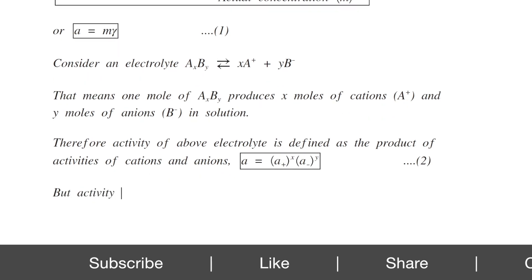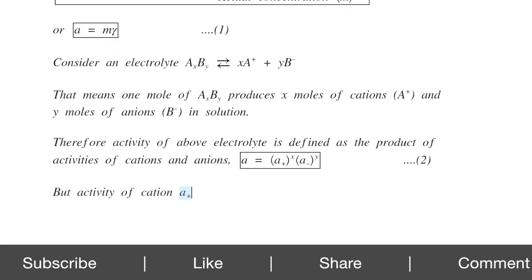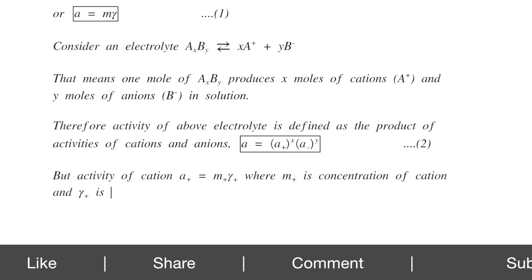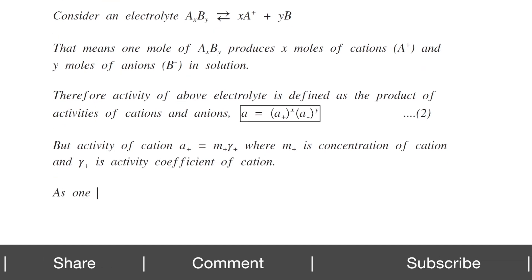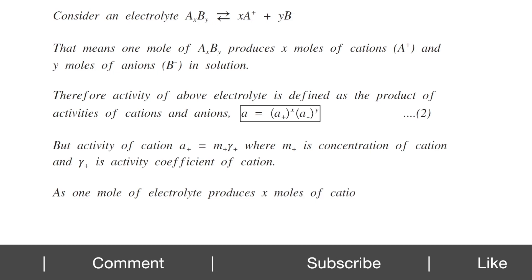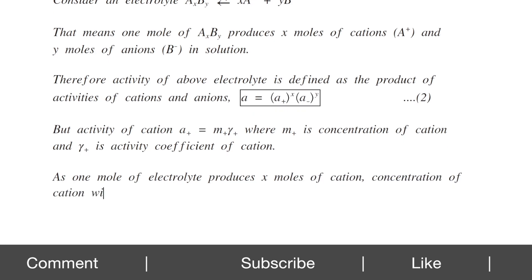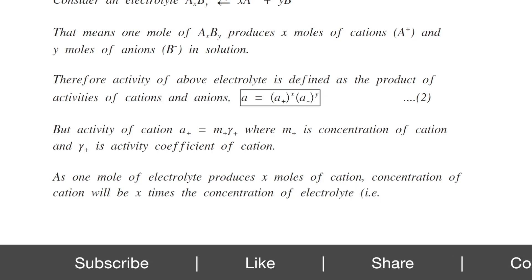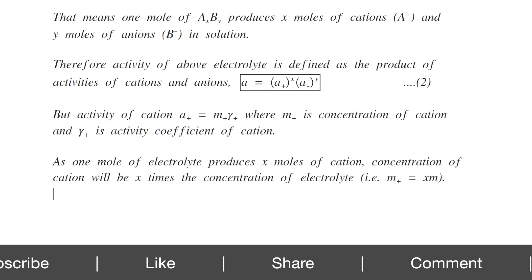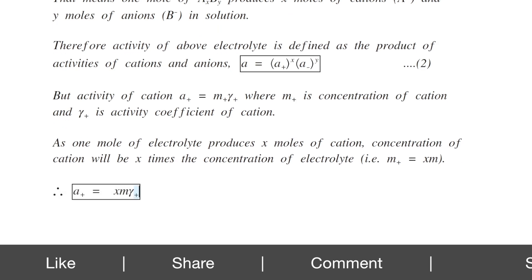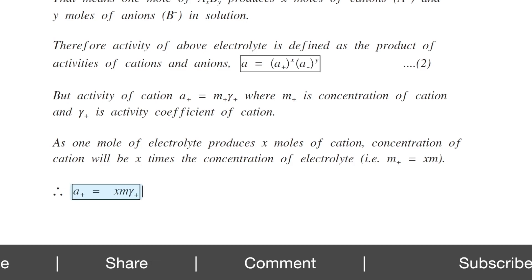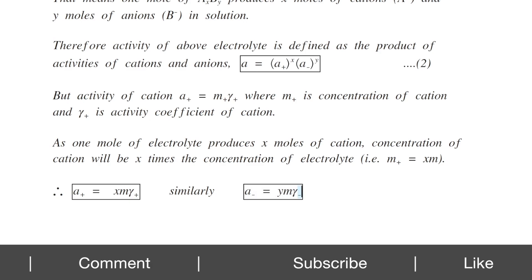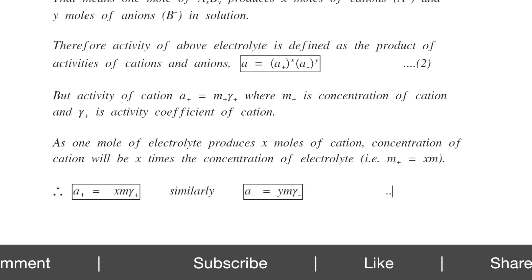The activity of cation A⁺ equals M⁺ times Gamma⁺, where M⁺ is the concentration of the cation and Gamma⁺ is its activity coefficient. Since 1 mole of electrolyte produces X moles of cations, the concentration of cation M⁺ equals X times M. Therefore, A⁺ equals X·M·Gamma⁺. Similarly, for anions, A⁻ equals Y·M·Gamma⁻. This is equation number 3.